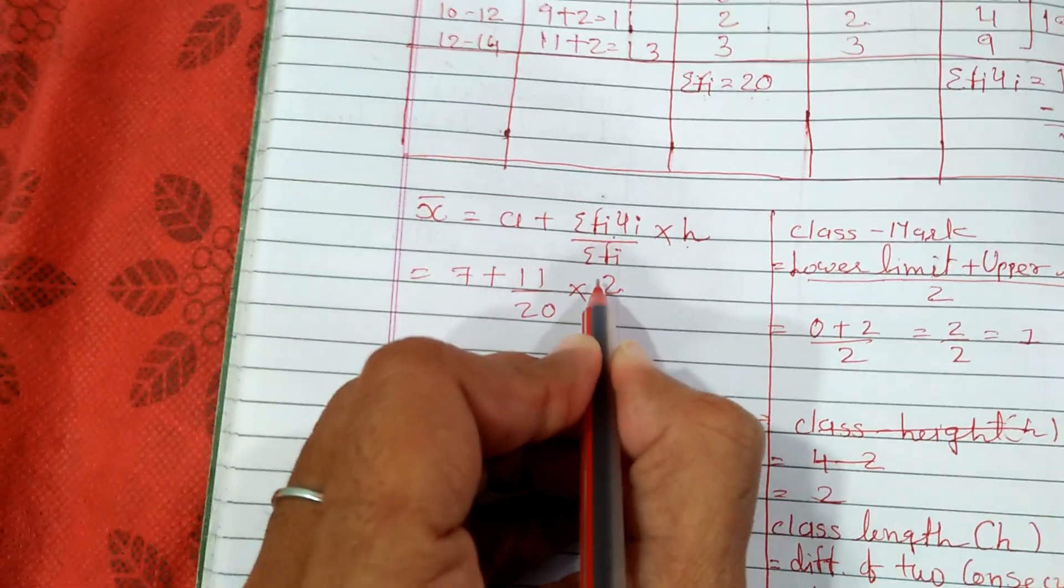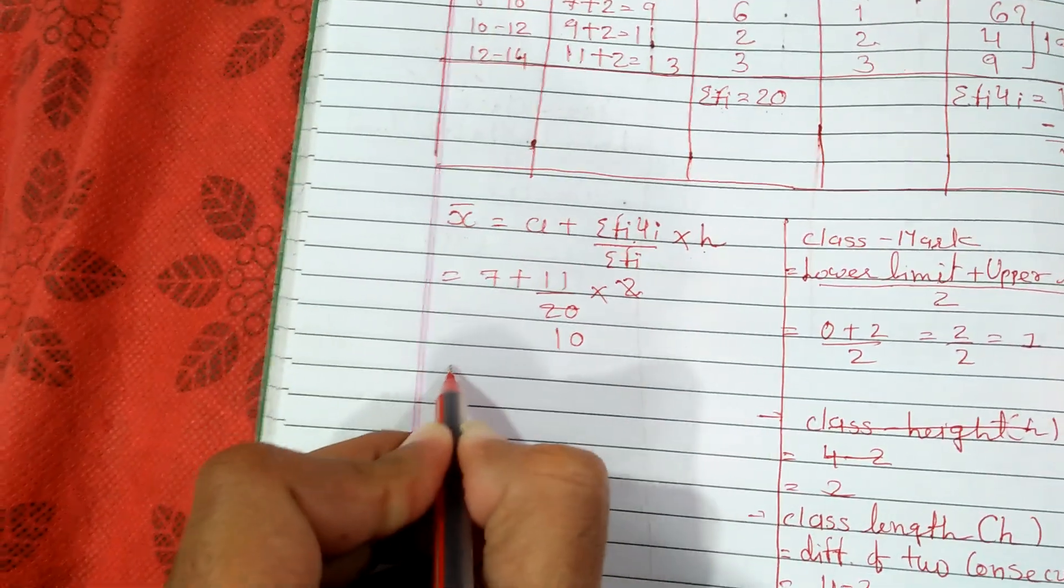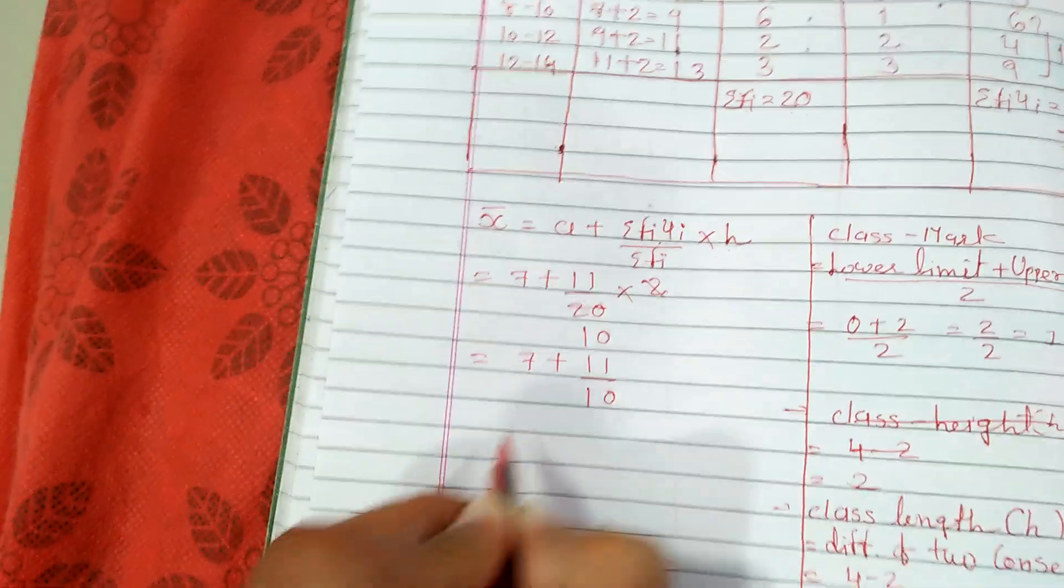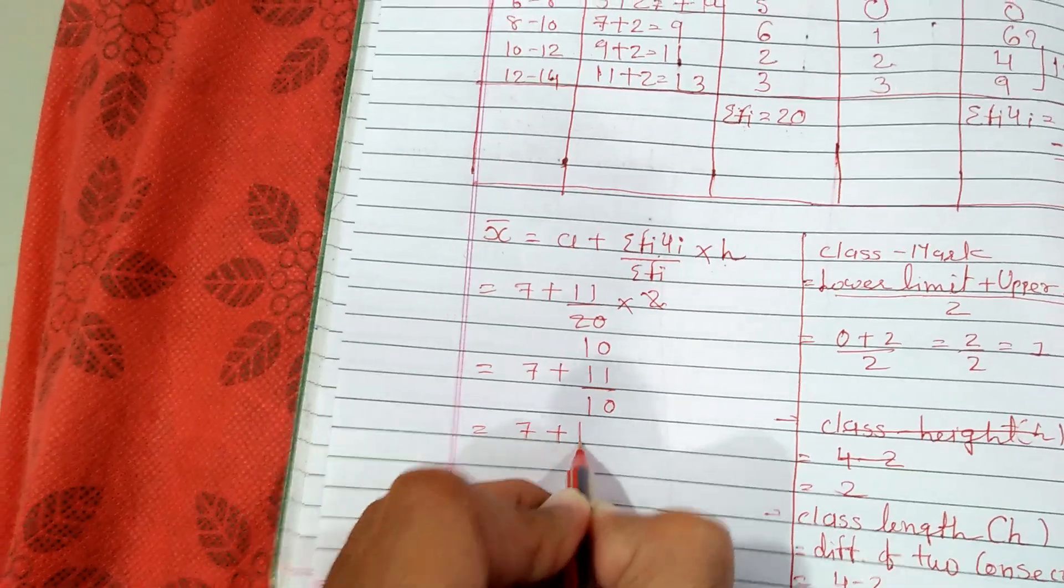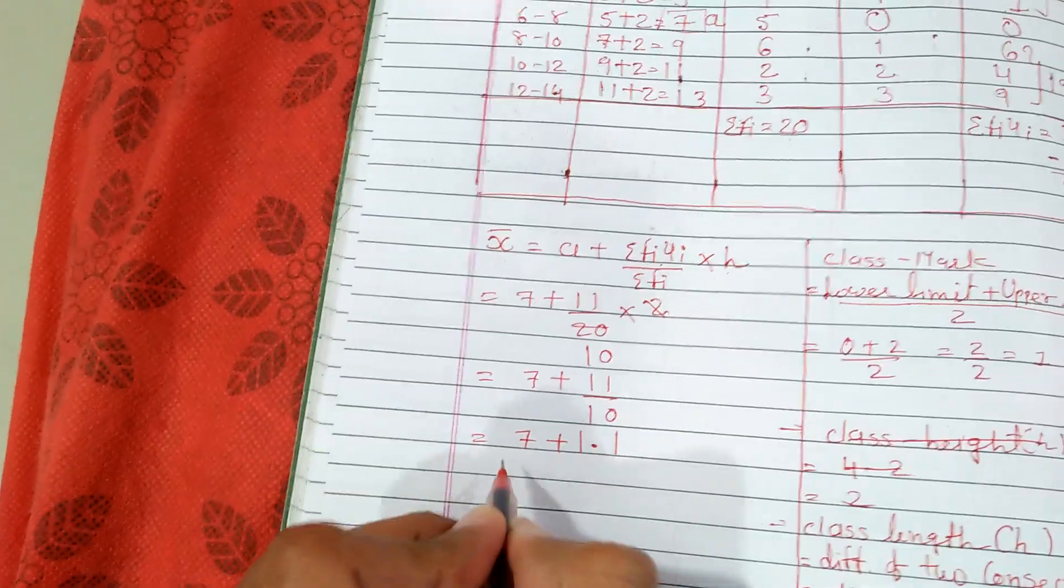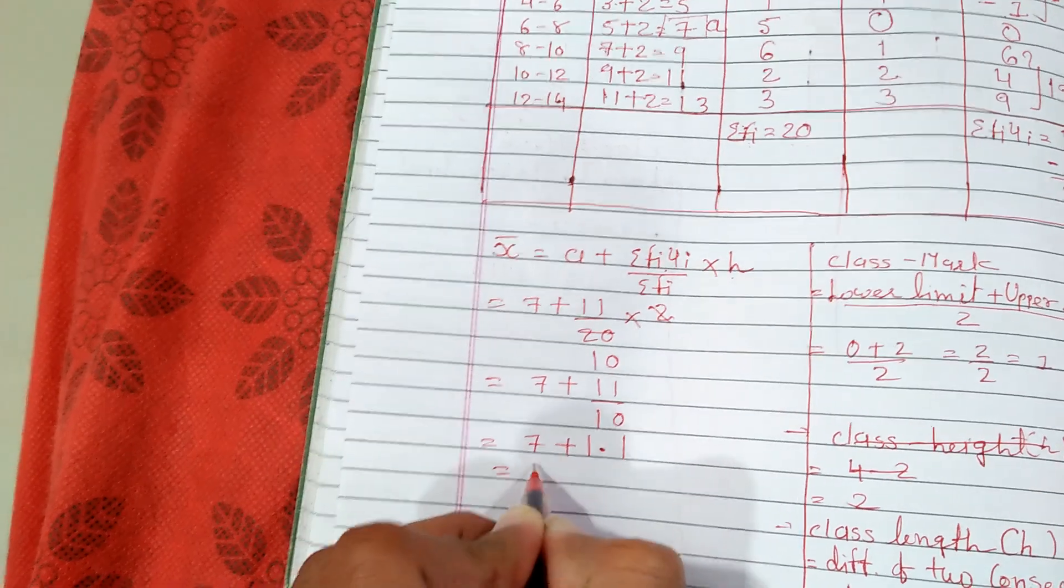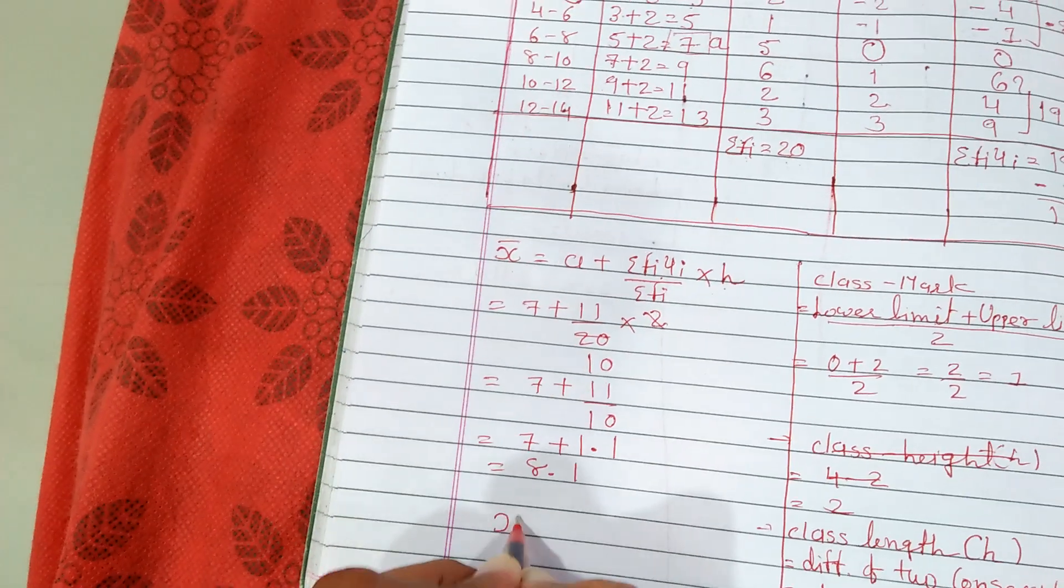Let us reduce this. 2 into 10 equals 20. It will be 7 plus 11 by 10. So 11 by 10 will be 1.1.